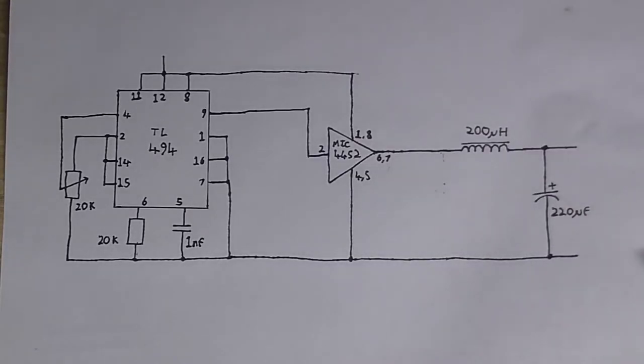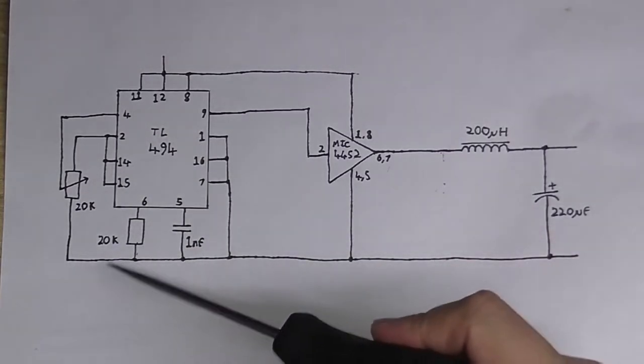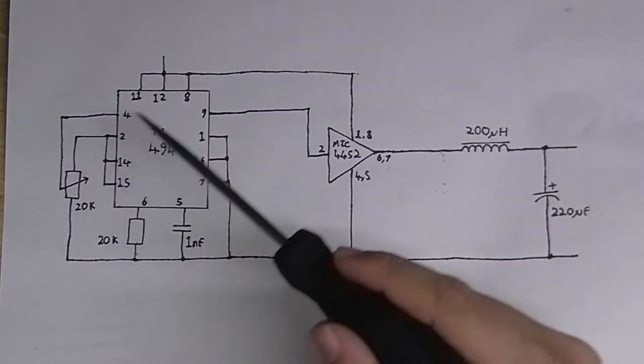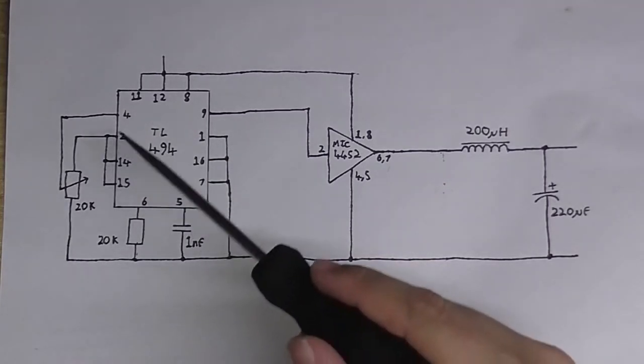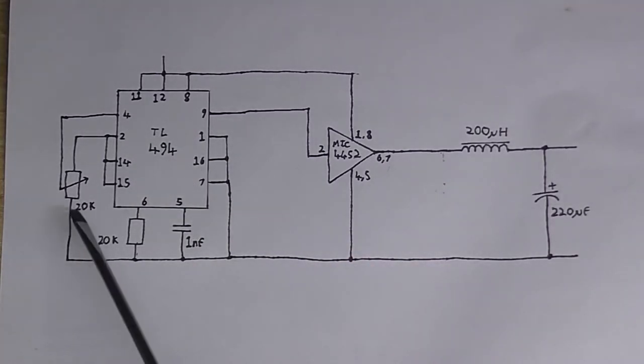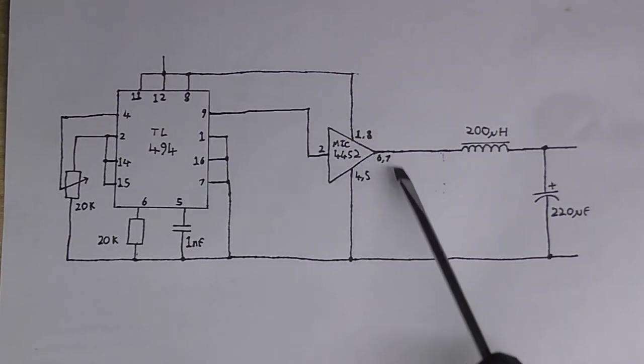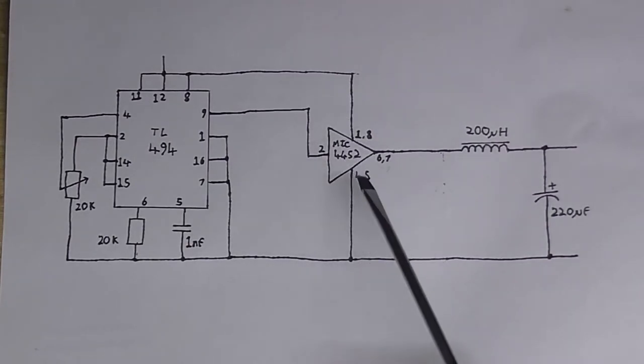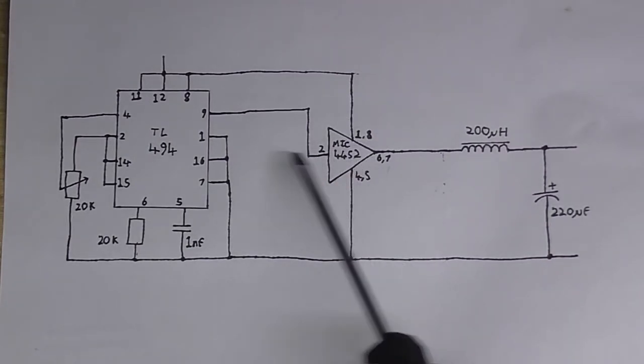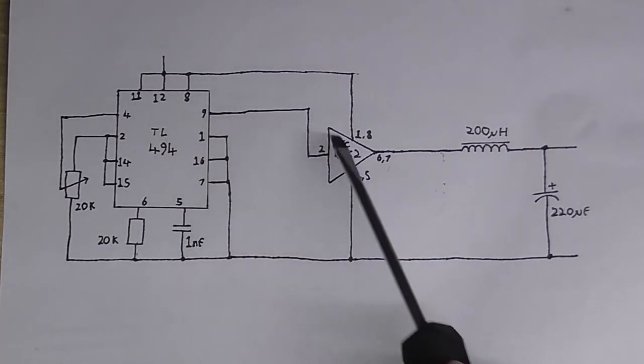So, this is the circuit so far. We've got a TL494 set up as a variable duty cycle square wave oscillator, and this potentiometer here is how we set the duty cycle. Then that's going into this gate drive chip, which is basically acting as a buffer, so it's doing all the heavy work so we don't overload the TL494's output transistors.